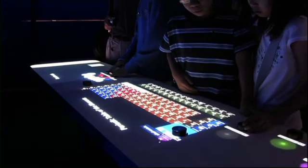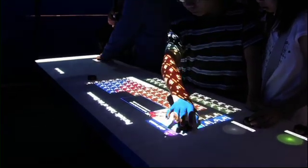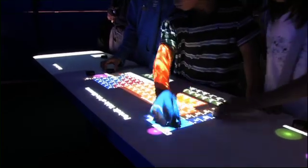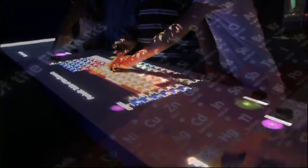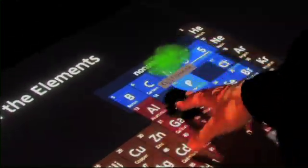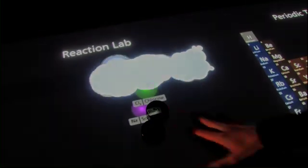This is an exhibit at the Museum of Science and Industry in Chicago. It's part of their huge new Science Storms wing. And the idea is that we have a periodic table of the chemical elements, and people can use physical objects to grab atoms off the periodic table.